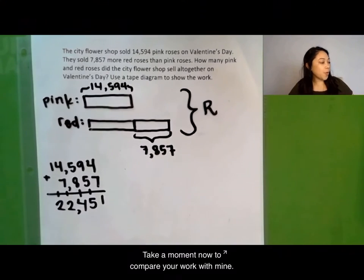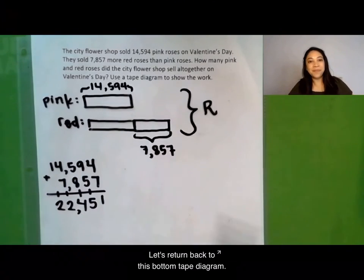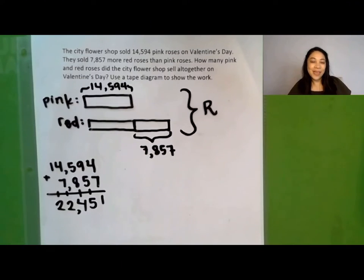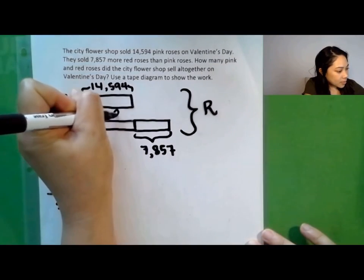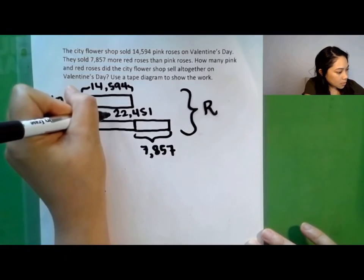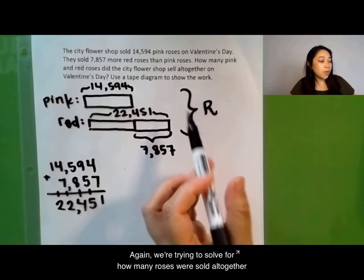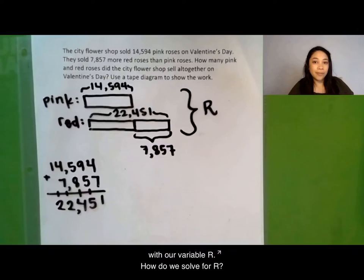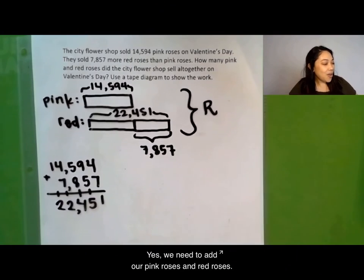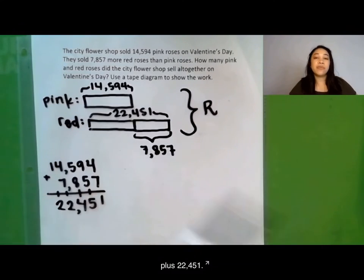Take a moment now to compare your work with mine. Let's return back to this bottom tape diagram. How many red roses were sold? 22,451 red roses were sold. We're trying to solve for how many roses were sold all together with our variable r. How do we solve for r? We need to add our pink roses and red roses, so 14,594 plus 22,451.